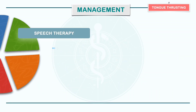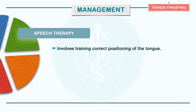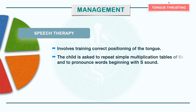Next is speech therapy. It involves training correct positioning of the tongue. The child is asked to repeat simple multiplication tables of 6 and to pronounce words beginning with the S sound. This method is not indicated before the age of 8 years.